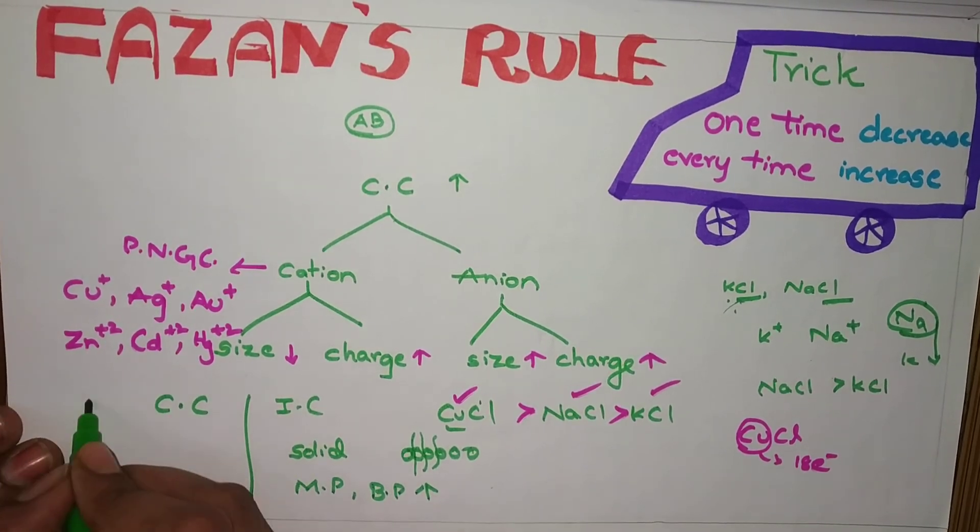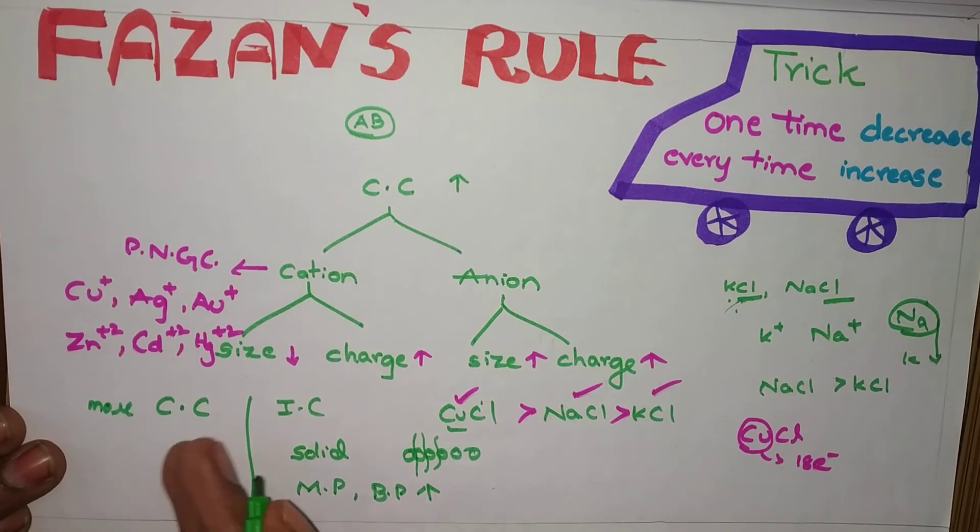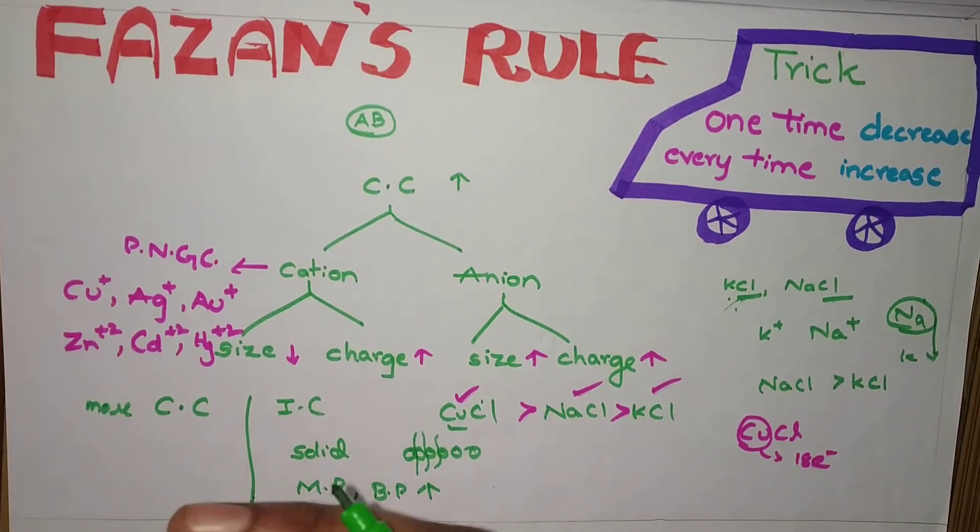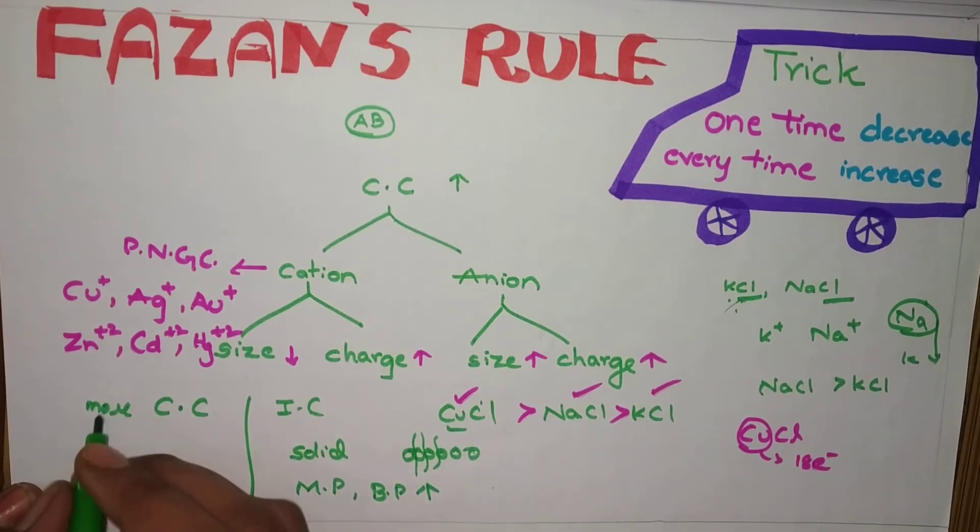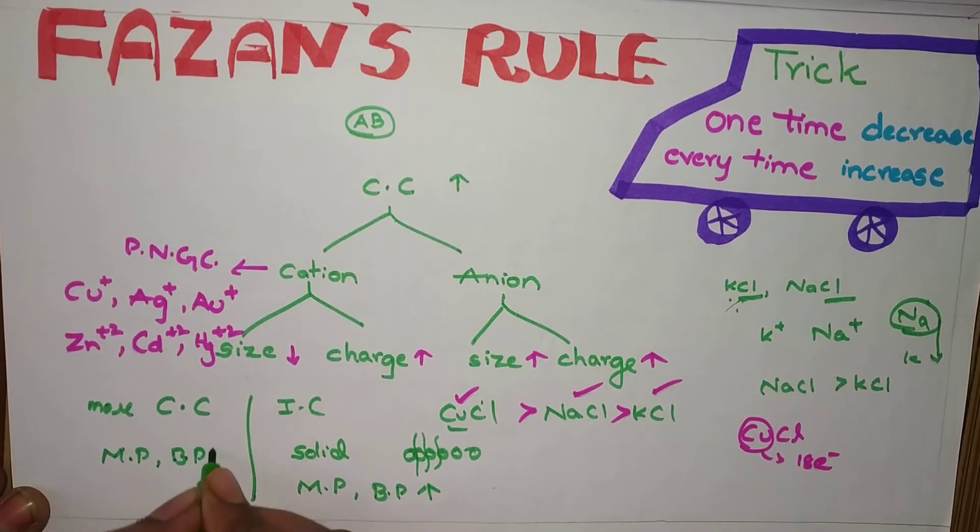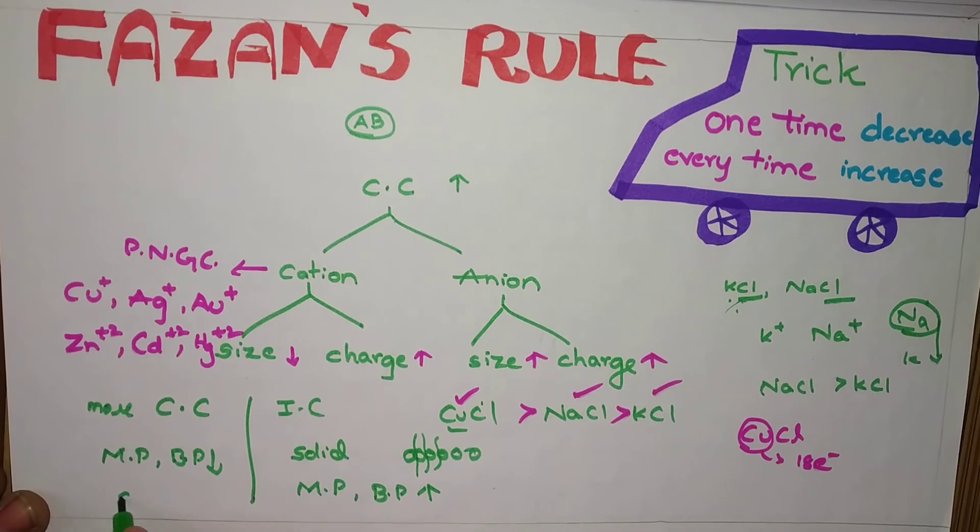If covalent character is more, it means what happens? There will be ionic character less. Ionic character less in the sense, melting point, boiling point will be less. Covalent character increases, melting and boiling point decreases. And next, solubility also decreases.